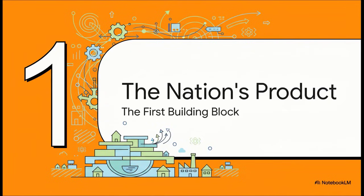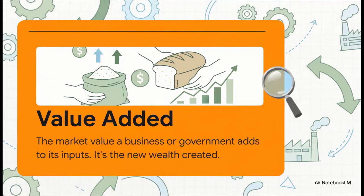So where do we start? Every good structure needs a solid foundation. And for an economy, that foundation is what we call its product — basically the total value of everything that gets created by everyone, from businesses to the government. The absolute key concept here is value-added. A baker buys some flour for a dollar and then sells a loaf of bread for $3. Did they create $3 of new value? No. They added $2 of value to that flour. And that's what national accounting is all about — just adding up all that new wealth that's created, step-by-step, across the whole economy.